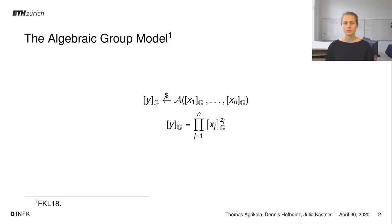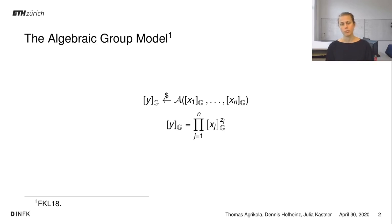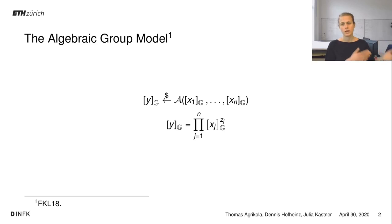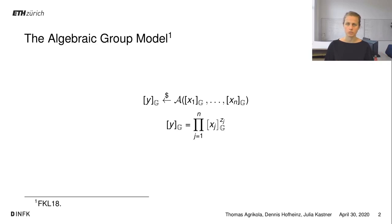What is the algebraic group model? The algebraic group model is a computational model introduced by Fuchsbauer-Kilsen-Loss. In the algebraic group model, we assume that when an adversary gets group elements as input and outputs a group element, he must know how to compute the output from the inputs. He must give us a representation vector z — a vector of exponents — such that exponentiating the inputs with this vector yields the output group element. This representation vector can be used in security reductions to compute additional information, for example discrete logarithms.